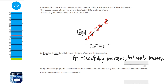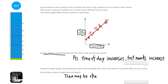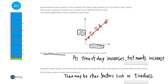It says using this scattergraph, the examination centre concludes that time of day leads to a positive effect on test scores. Are they correct to make this conclusion? Basically this is a question about the fact that just because two things correlate does not mean that one causes the other. A sentence like 'there may be other factors such as tiredness or fatigue' would work. Try and make sure you give an example to support your argument.